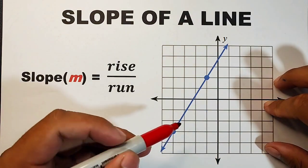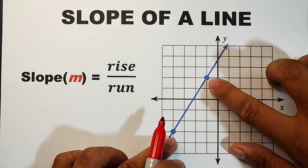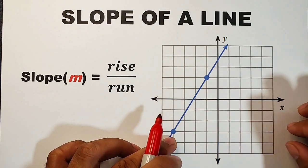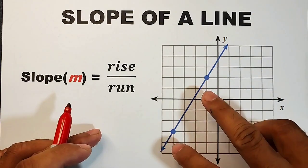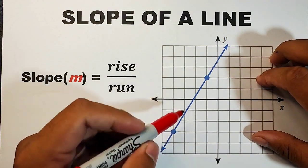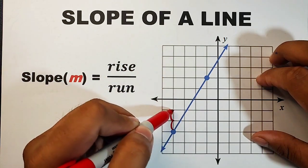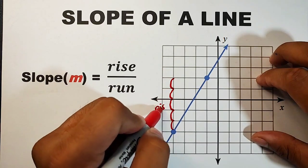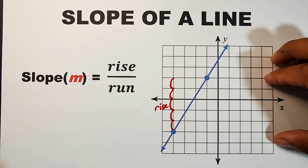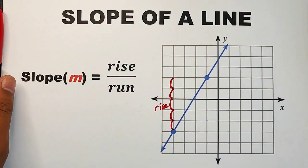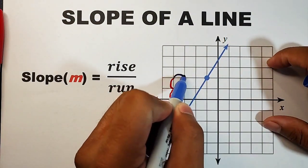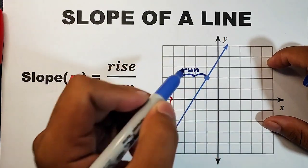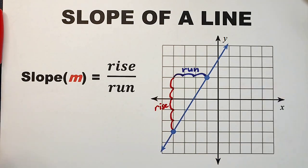Let me demonstrate where the rise is. As you can see, we have a straight line with two different points. To calculate the slope, we only need two points from a straight line. Going up, we have one, two, three, four, five units — this is your rise, the change in the y values. For the run, we count two, three — that is your run. So we can calculate the slope using this formula.